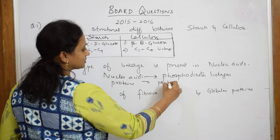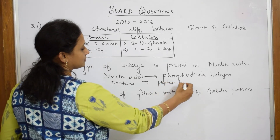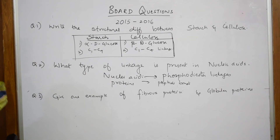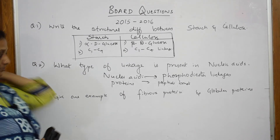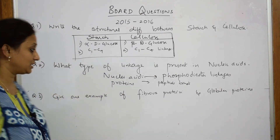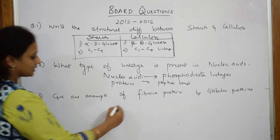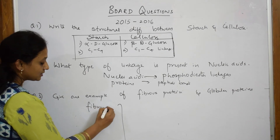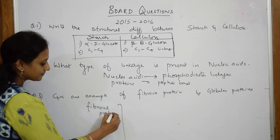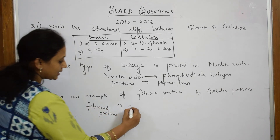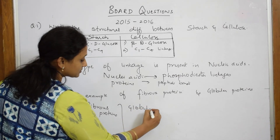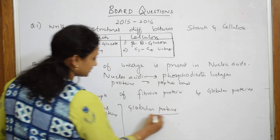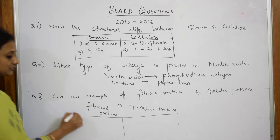The bond present in proteins is your peptide bond. Now let us come back to the next part: give an example of fibrous protein and globular protein. Just divide your answer — they've asked for fibrous proteins and globular proteins.